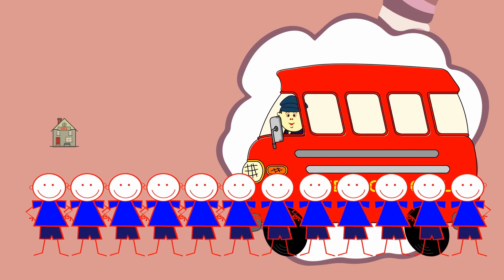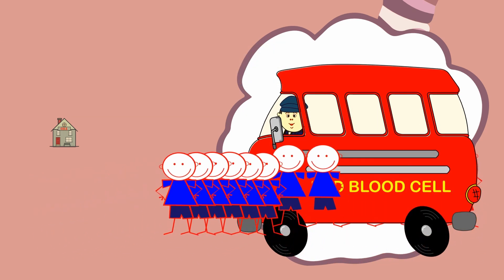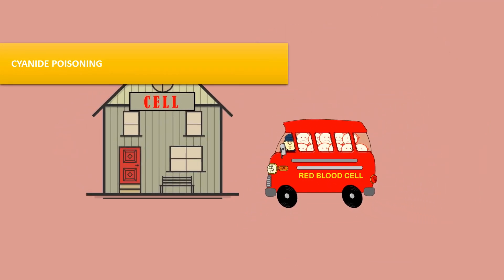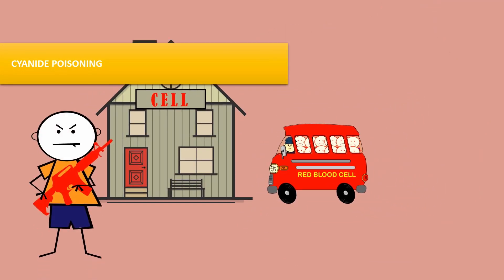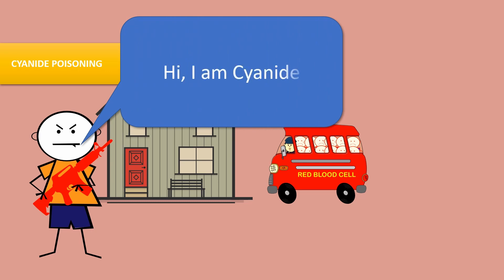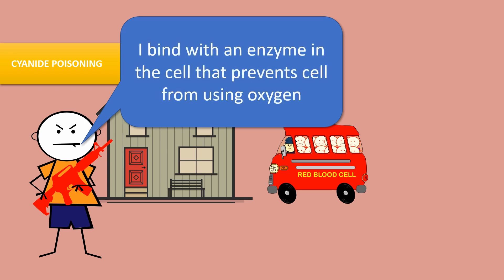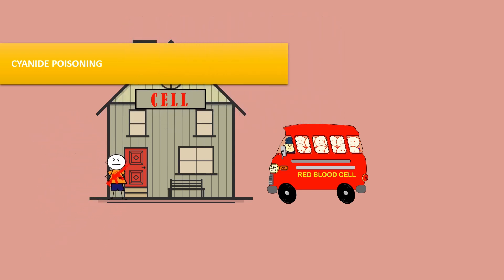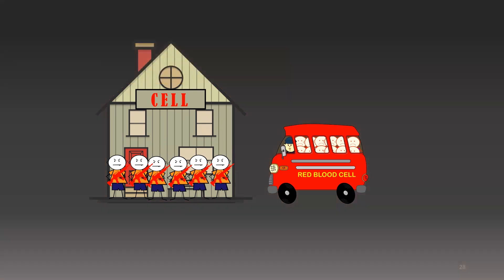Now we move to another substance that can also cause hypoxia. Cyanide is a chemical found naturally in some foods and also from manufacturing and industrial processes such as insecticide and plastic manufacturing. Cyanide reversibly binds to an enzyme called cytochrome oxidase in the mitochondria, causing cessation of aerobic cell metabolism, which also leads to cell hypoxia.